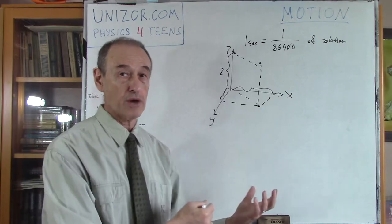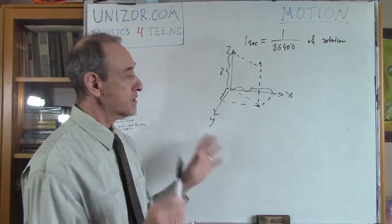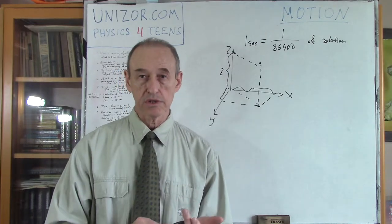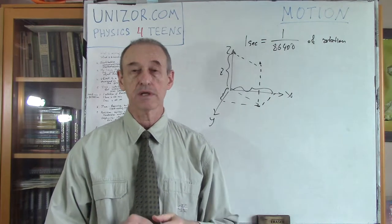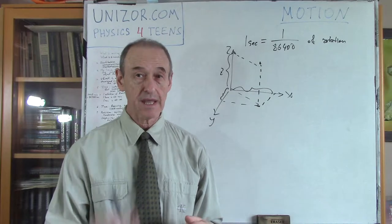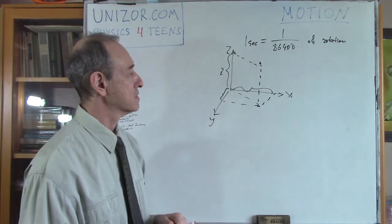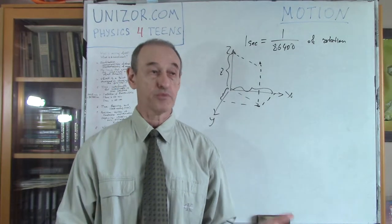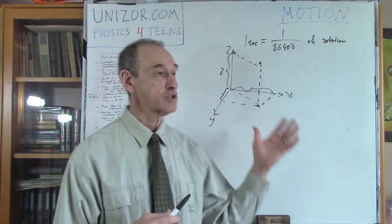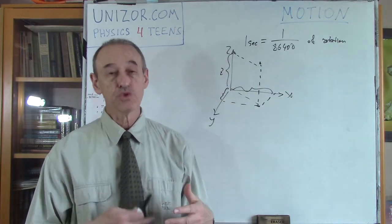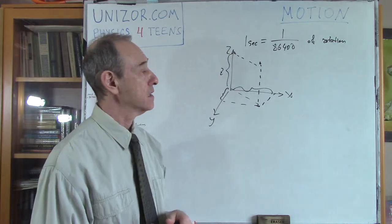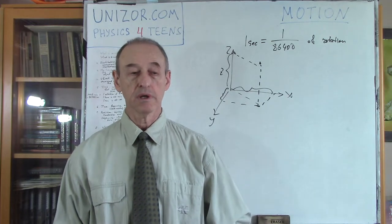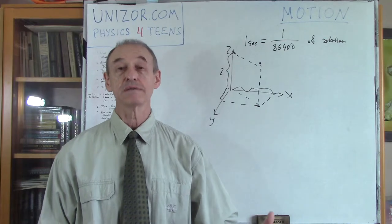That is sufficient to describe motion as a function of position over time — the position is the value of the function and time is the argument. Whenever we talk about time, we have to know where the beginning of time is and what the unit of time is. The unit of time is a second, which is the international standard in physics. As for the beginning of time, traditionally in the context of movement, the beginning of time is the start of the movement.